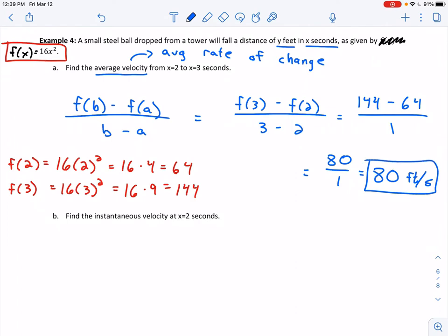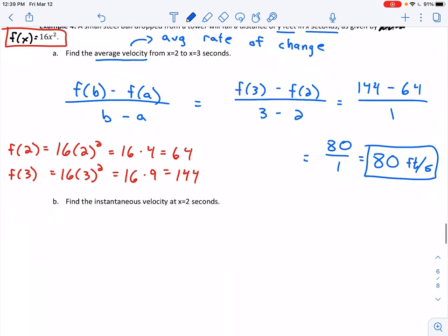Part B is where things get interesting. We want to find the instantaneous velocity at x=2. When we see the word instantaneous, or even just velocity by itself, think about the derivative f'(x). For part B, I need to find the derivative of my function, and then evaluate it at x=2. I'll plug x=2 into my derivative, which will tell me the instantaneous velocity.